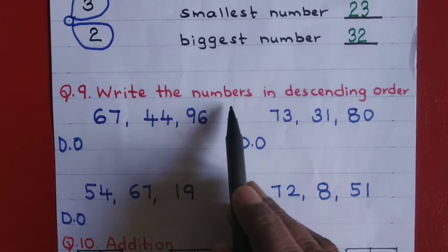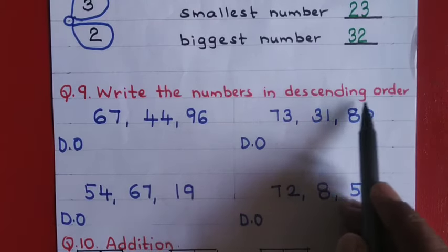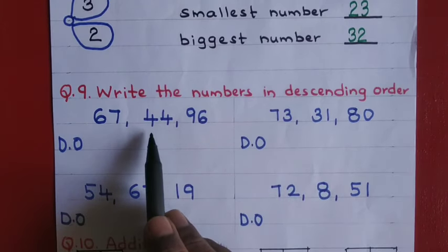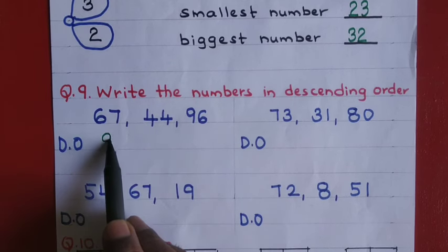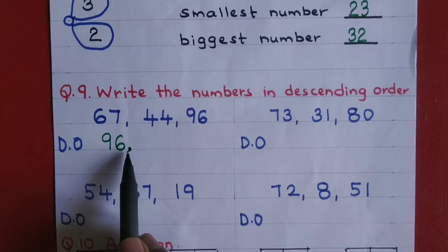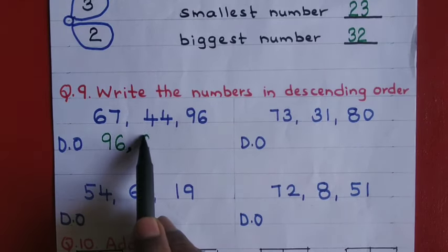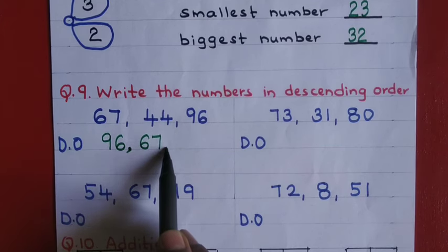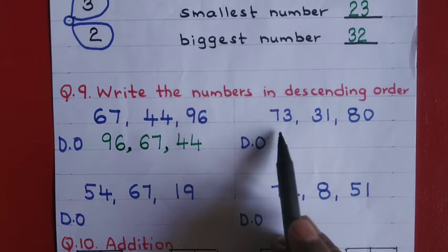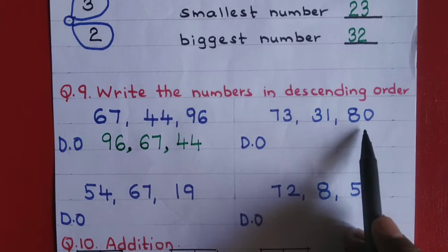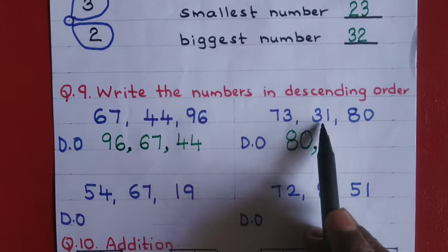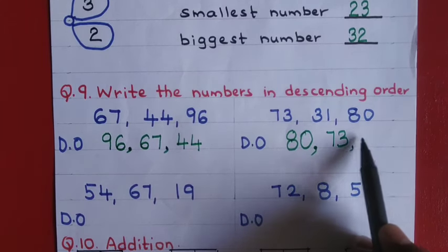Question number nine: write the numbers in descending order. Descending order means arranging the given numbers from biggest to smallest. For sixty seven, forty four, and ninety six: ninety six is the biggest, write it first, put a comma, then sixty seven, then forty four. Similarly for seventy three, thirty one, and eighty: eighty is biggest, then seventy three, then thirty one.